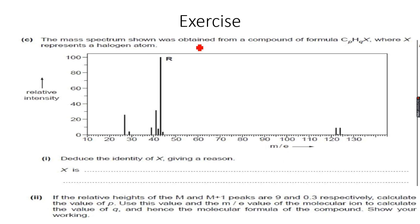that the mass spectrum shown was obtained from a compound of formula CpHqX, where X represents a halogen atom. So X is a halogen, and I have p carbon atoms and q hydrogen atoms.